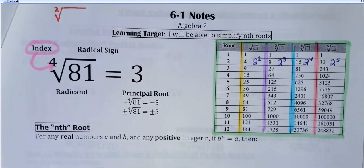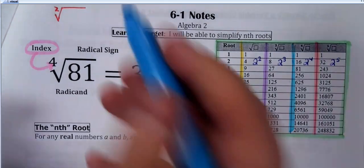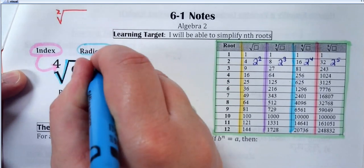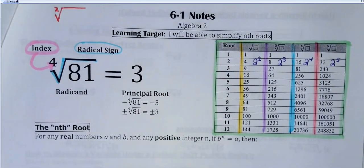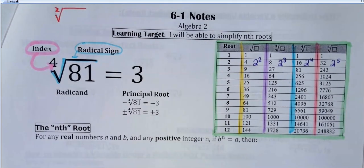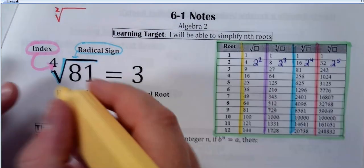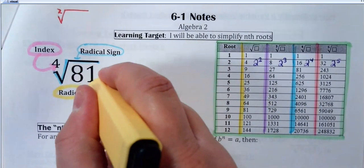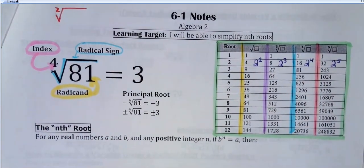You don't typically see a 2 there, but technically it would be for a square root. Any other root, there's going to be a little number out in front. The radical sign is literally just this symbol that goes around the number you're taking whatever root of. Here I'm taking a fourth root — that's your radical sign. And then what we call the radicand is the number you're taking the root of. So for this problem, that would be 81 — it would be the radicand.